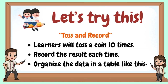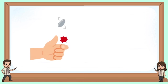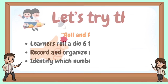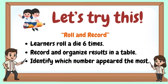Let's try this. Toss and record. Learners will toss a coin ten times. Record the result each time and organize the data in a table. Then roll a die six times, record and organize the results in a table, and identify which number appeared the most.